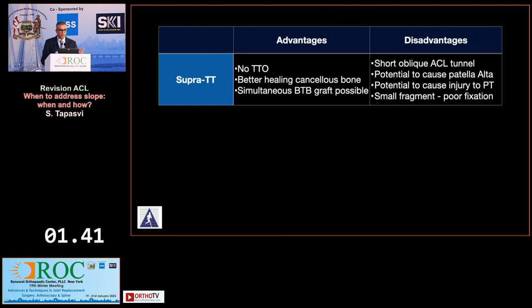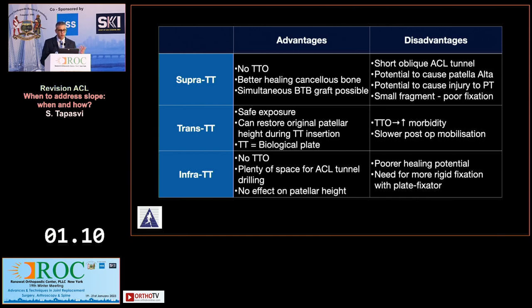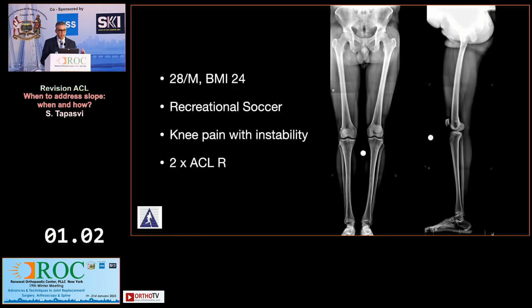The supratubercle approach has better cancellous bone and allows BTB graft harvest at the same time, but leaves a small area for ACL revision drilling and risks non-union problems. A trans-TTO gives safer exposure with the risk of TTO healing, but the TTO acts like a biological plate affording more stability. Below the tibial tubercle is generally avoided because you go through more cortical bone, which may result in healing problems.